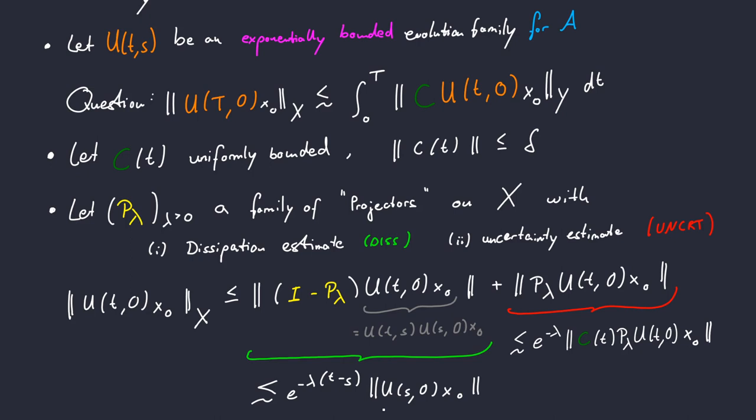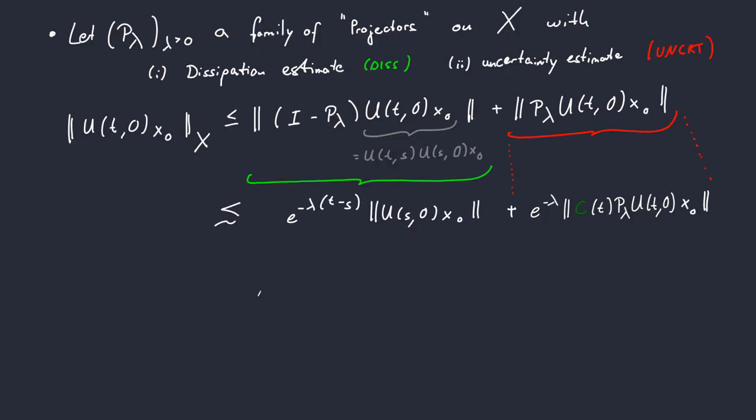The next step we use the exponential decay property in order to derive some kind of an interpolation estimate. And we see that we can estimate here in yellow on the left hand side the solution at time T by a constant times the solution at time S and the observation of the solution at time T.